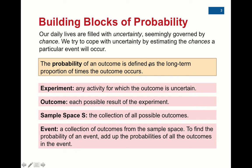The probability of any outcome is defined as the long-term proportion of times the outcome occurs. For instance, the probability of flipping heads is one-half. But if you flip a coin 10 times, that doesn't guarantee you'll get five out of ten heads — you might get four or three. But eventually, in the long run, if you keep flipping, this has to do with the law of large numbers, the probability should get very close or equal to 50%.